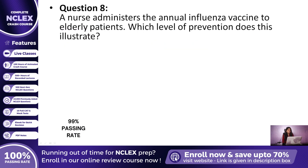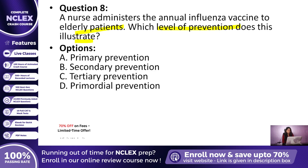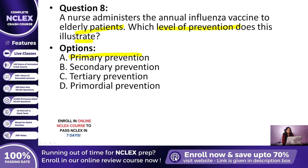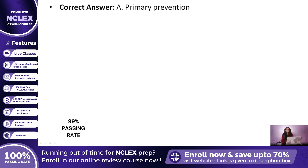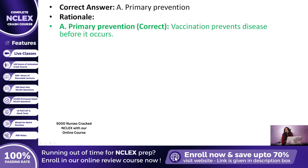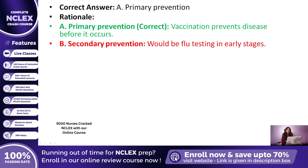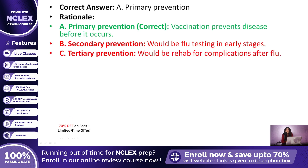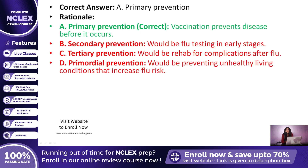Question 8: A nurse administers the annual influenza vaccine to elderly patients. What level of prevention does this illustrate? The correct answer is A — Primary prevention. Vaccination is one of the best examples of primary prevention because it prevents disease before it even occurs. Screening for flu would be secondary, rehab after flu complications would be tertiary, and primordial would be preventing poor living conditions that increase flu spread.